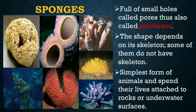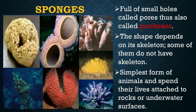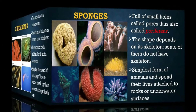Sponges are among the simplest invertebrates. The body of a sponge is full of small holes called pores, thus they are also called porifera. A narrow canal connects the pores to one another. The shape of a sponge depends on its skeleton; however, some sponges do not have a skeleton. They spend their lives attached to rocks or underwater surfaces.